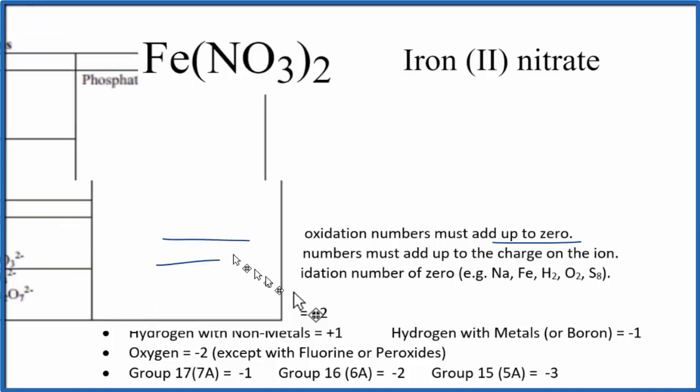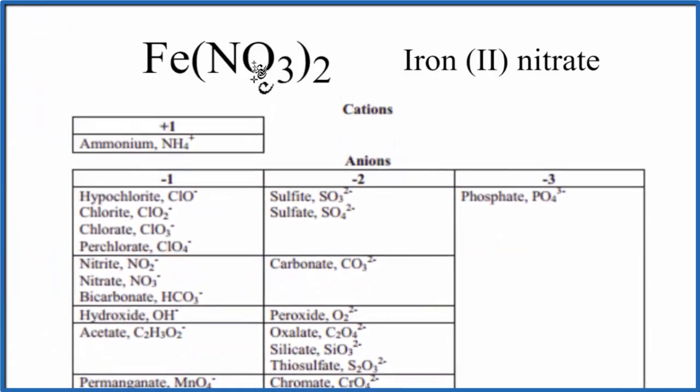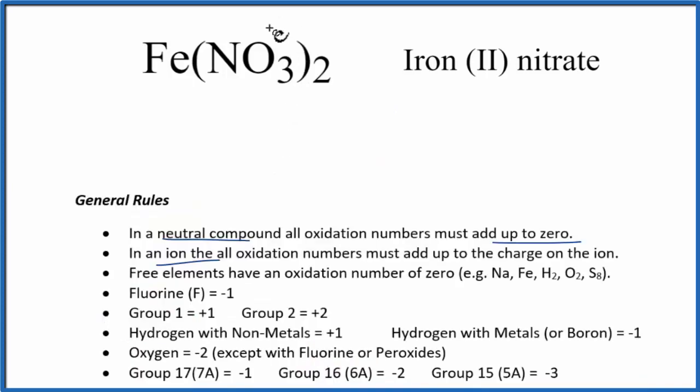Let's look at a table of common polyatomic ions. If we look down here, here is nitrate and that has a minus one. That's the oxidation number. So let's put our minus one up here. This applies to this whole nitrate here.